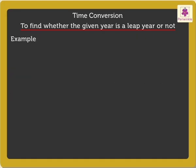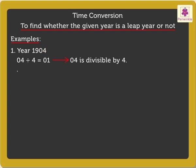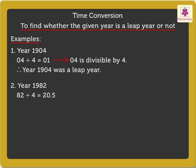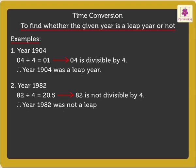Now, let us look at a few examples to understand it in a better way. Let us find out whether the year 1904 was a leap year or not. Here, the number represented by the last two digits is 04, which is divisible by 4. Thus, 1982 was not a leap year.